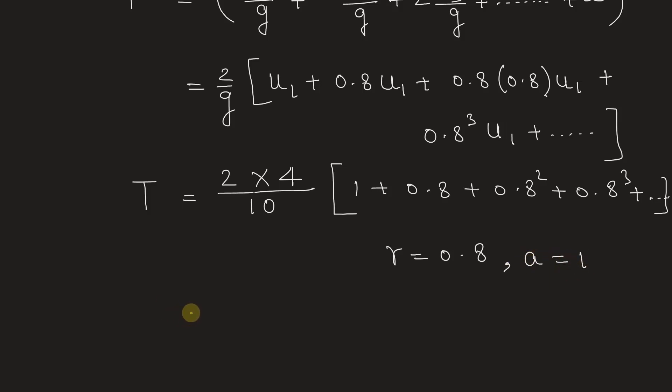So we know to find the sum of GP, infinite number of terms of GP as S_n is equal to a by 1 minus r. So this will be equal to a is 1 divided by 1 minus 0.8.